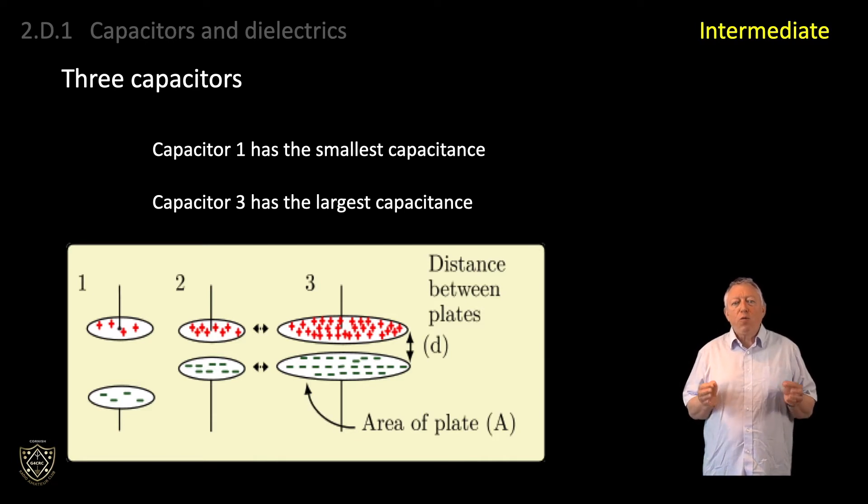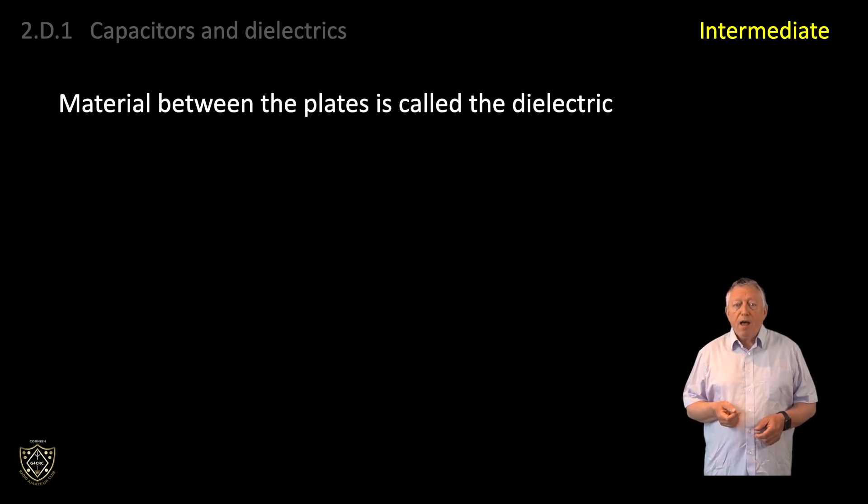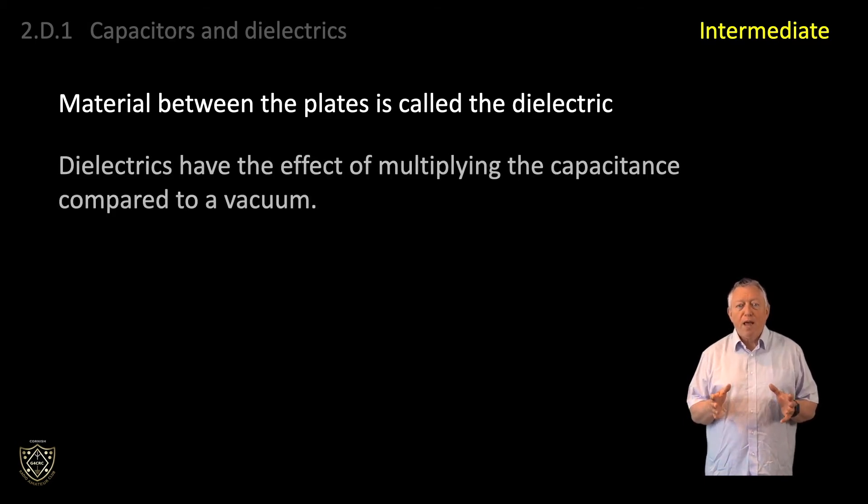The material between the plates is called the dielectric. It can be any insulating material or no material at all. Types of dielectrics include a vacuum, air, paper, and mica, and many other materials, depending on the application for the capacitor. Dielectrics have the effect of multiplying the capacitance compared to a vacuum, which is otherwise called free space.